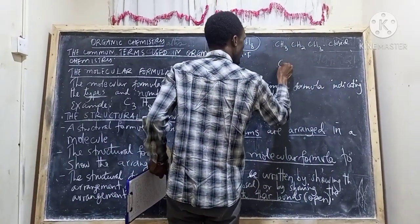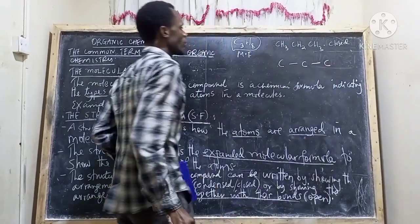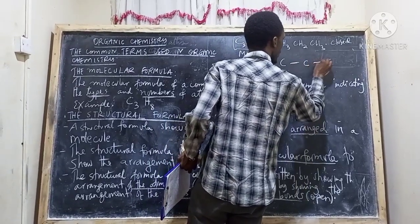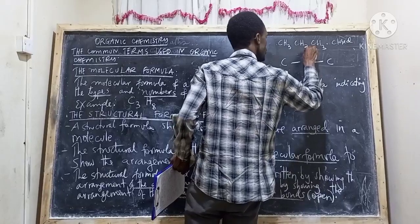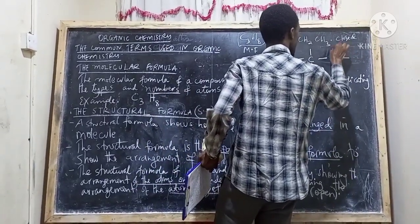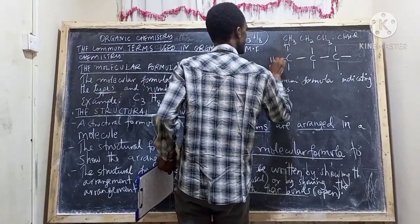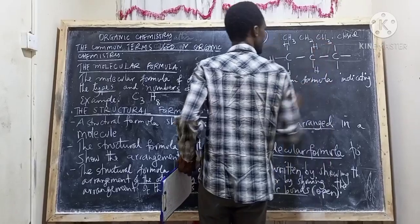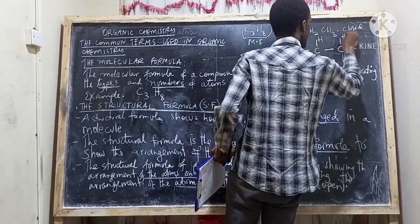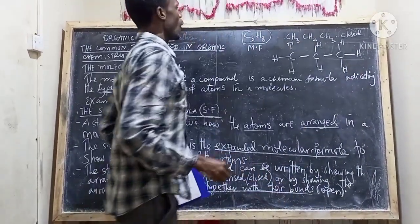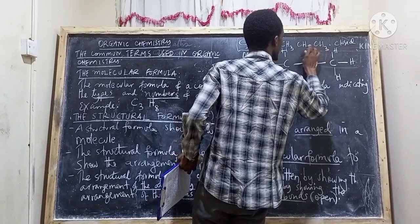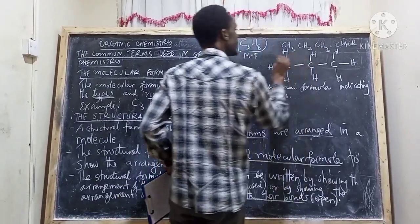But when you show them with bonds, you draw out each carbon — carbon is a tetravalent element, so it must be surrounded by four bonds. Here it is attached to three hydrogens, here to two hydrogens, because we need to complete the four valences of the tetravalent element. This is an open structure because it shows the arrangement of atoms together with their bonds, while the condensed structure shows only the arrangement of atoms.